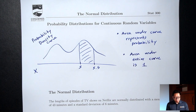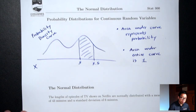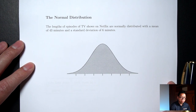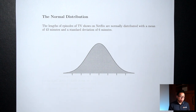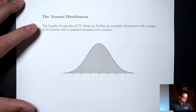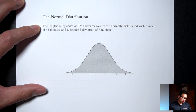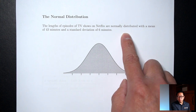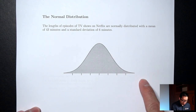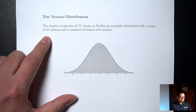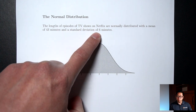The main curve we'll be talking about is one we've seen before — when we talked about the empirical rule. So let's do a little recap of the empirical rule. The lengths of episodes of TV shows on Netflix are normally distributed, which means the probability distribution looks like this bell-shaped curve, with a mean of 43 minutes and a standard deviation of 6 minutes.